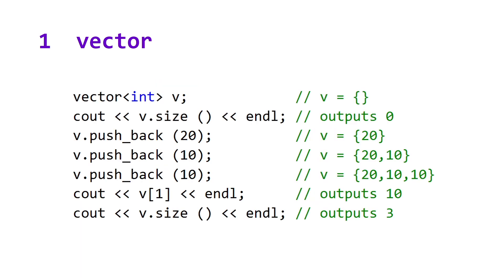Taking a look at our code example, after we initialize our vector, it has a size equal to zero. We then push back the values 20, 10, and 10, and the vector will then contain these values in that order. We then use the bracket operators plus an index to access a value in that vector. Because vector is zero-indexed, index one will retrieve the value 10. At the end of this code example, the size of our vector will be equal to three.